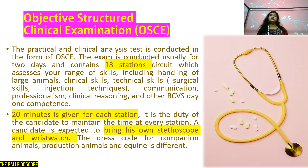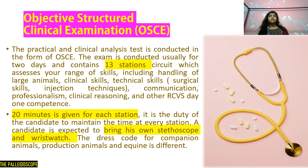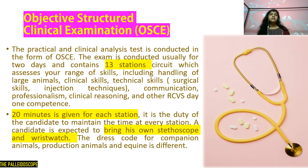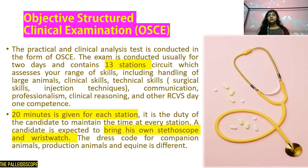OSCE — Objective Structured Clinical Examination: the practical and clinical assessment is conducted in the form of OSCE, usually over two days, containing a 13-station patient circuit. This assesses a range of skills including handling of large animals, clinical skills, technical and surgical skills, injection techniques, communication, professionalism, clinical reasoning, and other RCVS day-one competencies. Twenty minutes is given per station. Candidates must bring their own stethoscope and wristwatch. Dress code differs for companion animals, production animals, and equines.